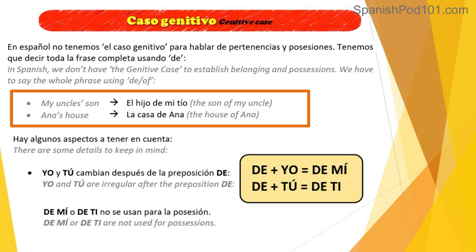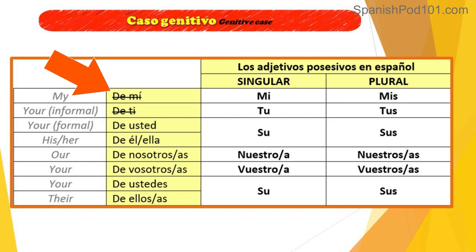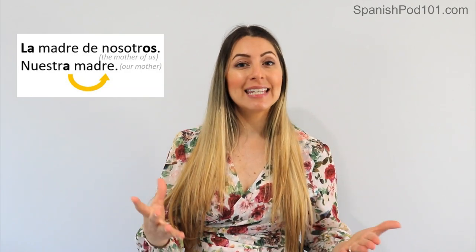Some important notes: 'yo' and 'tú' are irregular after the preposition 'de.' 'De + yo' becomes 'de mí' (not 'de yo'), and 'de + tú' becomes 'de ti' (not 'de tu'). However, 'de mí' and 'de ti' are not used for possessions — for possessions we use 'mi/mis' and 'tu/tus.' The possessive adjectives must match in gender and number what is being possessed, not the person possessing.